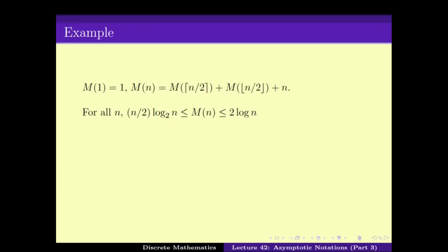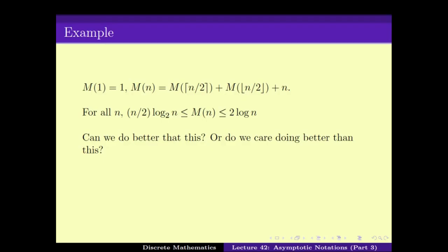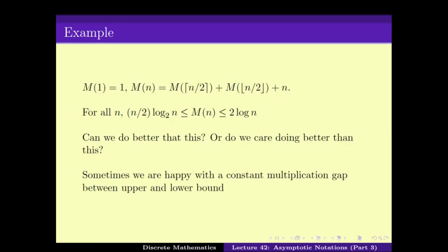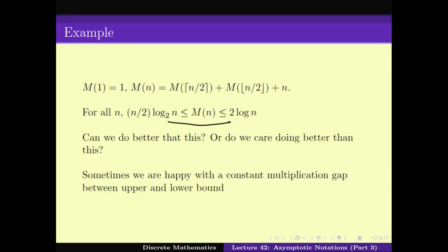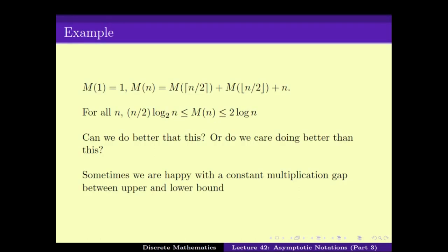We looked at the particular example M(N) = M(⌈N/2⌉) + M(⌊N/2⌋) + N. Instead of guessing, what we can do is upper bound and lower bound M(N) by some value. We could not guess the actual value of M(N), but we could upper bound and lower bound M(N), and these two values were not too far from each other. Sometimes this gap between the upper bound and lower bound is small enough that we don't care about improving it.